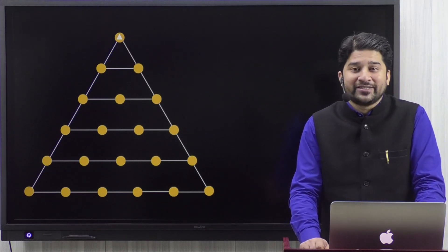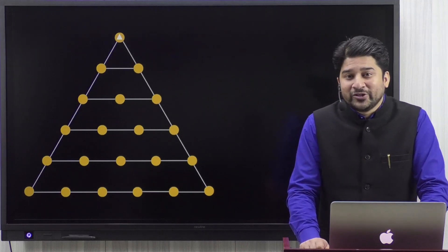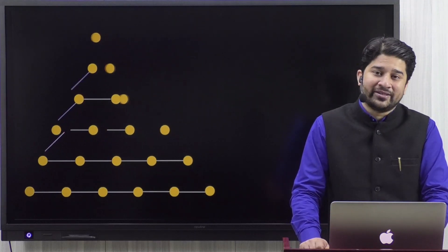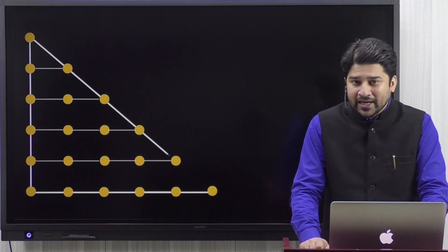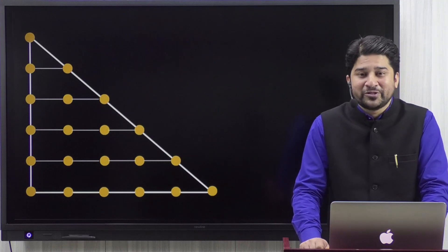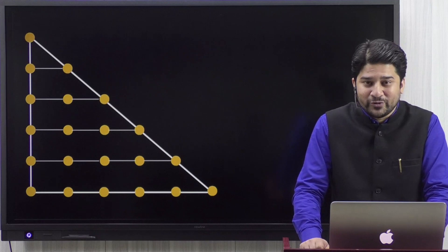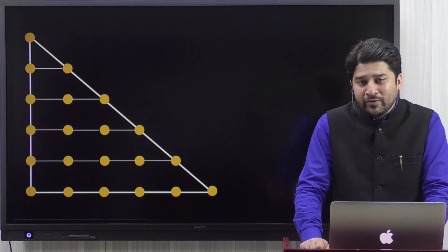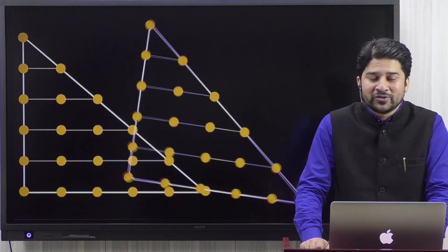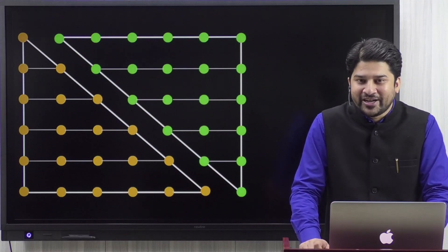What exactly is the sixth triangular number? Let's try to convert this equilateral triangle into a right-angle triangle. It still represents the sixth triangular number, because this right-angle triangle also makes one plus two plus three plus four plus five plus six. Now make a copy of it and rotate it — you now have two copies of the sixth triangular number. Let's try to align them together.